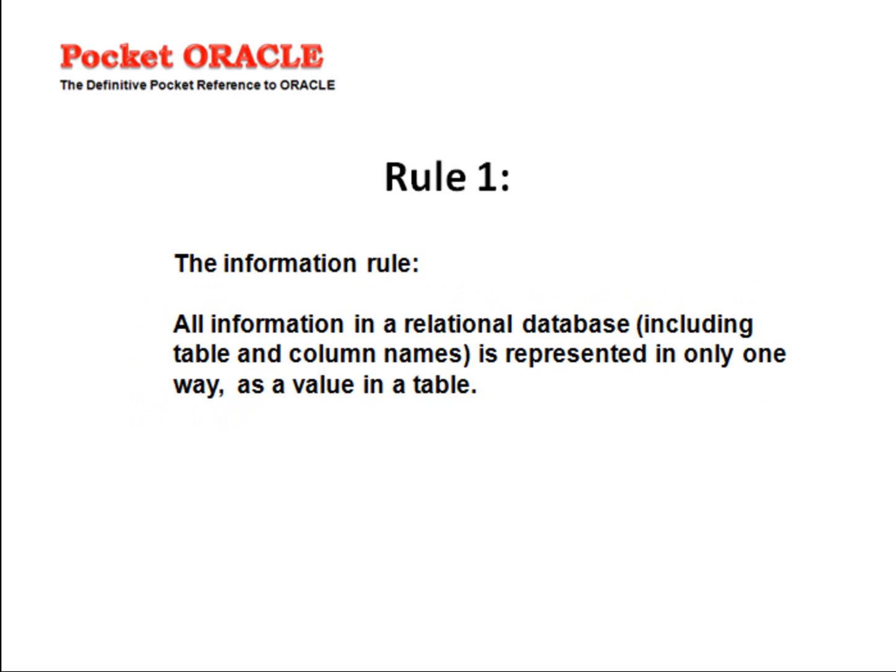Rule 1: The Information Rule. All information in a relational database, including table and column names, is represented in only one way — as a value in a table. The data dictionary in an Oracle database is an example of this.